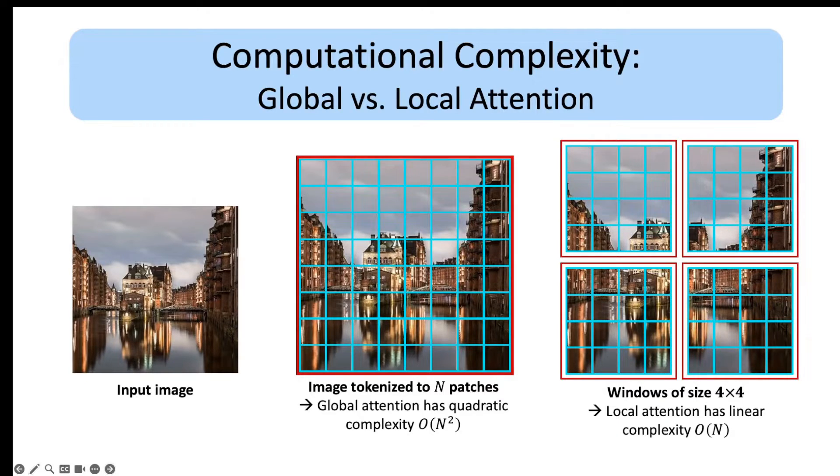First let's discuss the computational complexity of vision transformers. Given this input image, we split the image into a sequence of N patches according to the vanilla ViT. Then vanilla ViT uses global attention which has quadratic computational and memory complexity for computing the attention scores using multi-head self-attention. One approach to reduce the computational complexity is to replace global attention with window-based local attention. In that case, the MSA is only performed within each window as shown in the right.